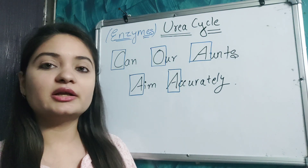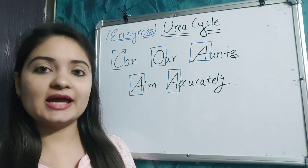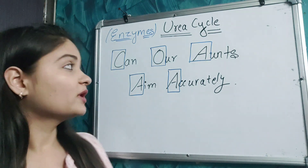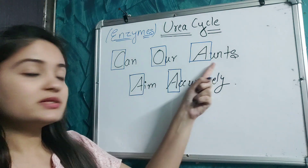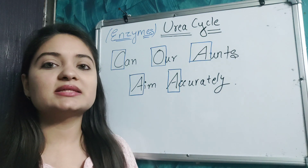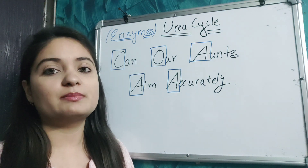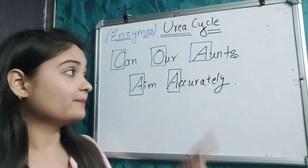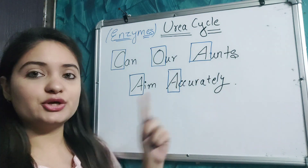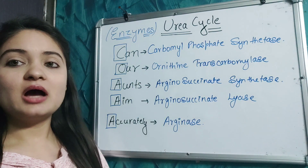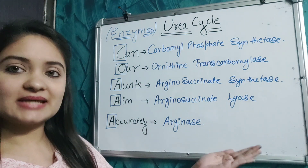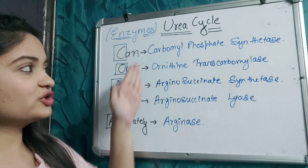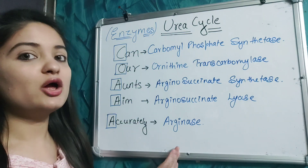We have talked about urea cycle intermediates. Now let's talk about urea cycle enzymes. It is a very easy and simple trick to remember the urea cycle enzymes. The trick is: 'Can our ants aim accurately?' Imagine that our ants or neighbors can aim accurately. I have written the trick on one side, and the enzymes used in the urea cycle on the other side.